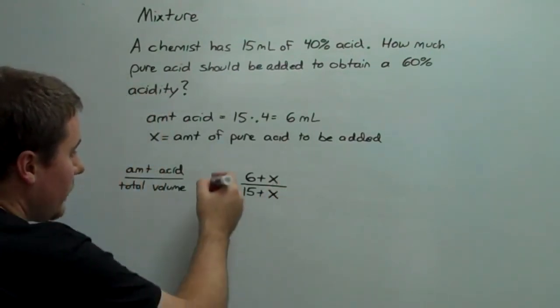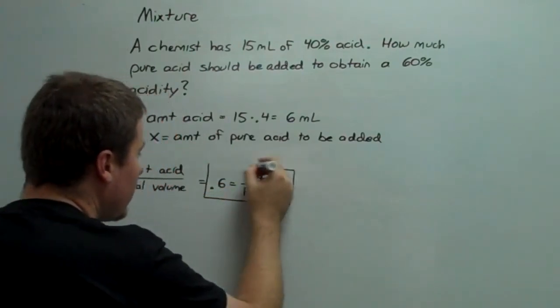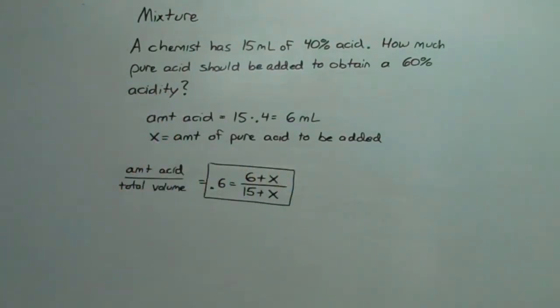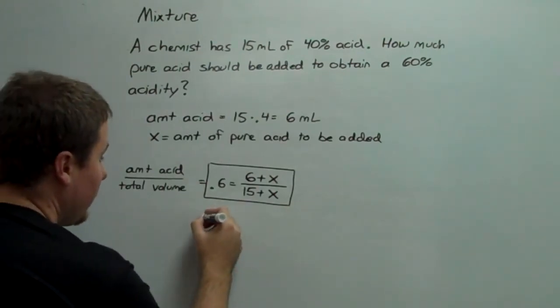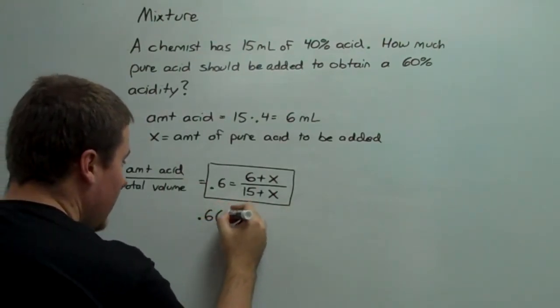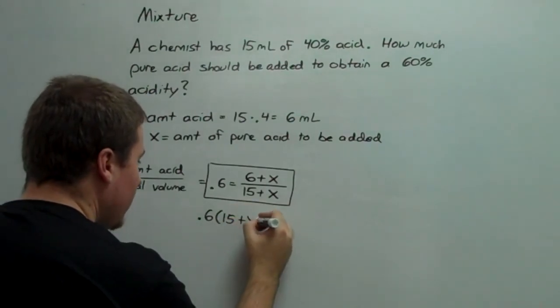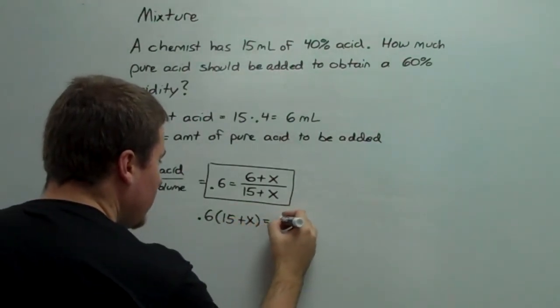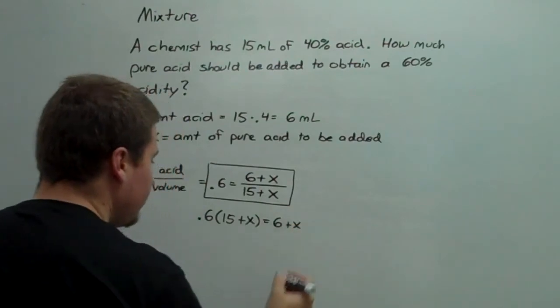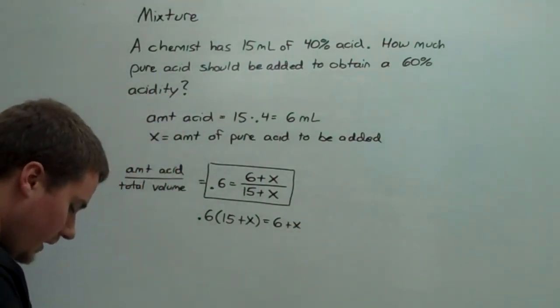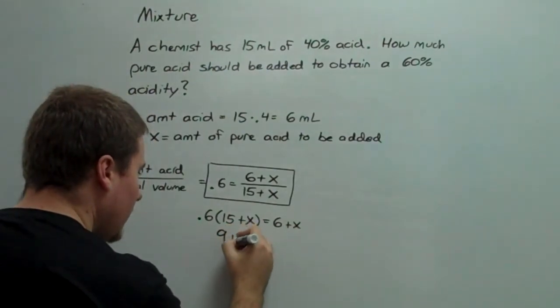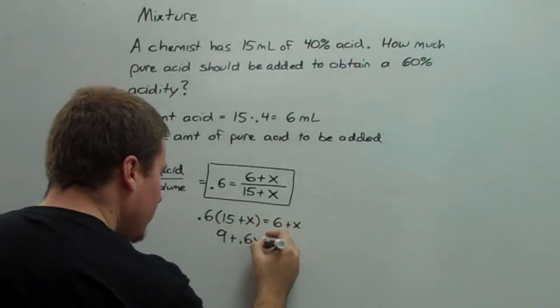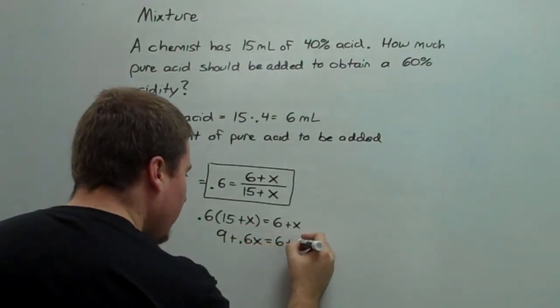So, consider this equation here. It's one equation in one variable. We need to cross-multiply. So, 0.6 times 15 plus x is equal to 6 plus x. So, 0.6 times 15 gives us 9, plus 0.6x is equal to 6 plus x.